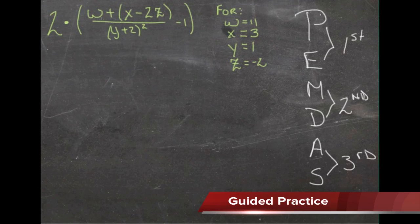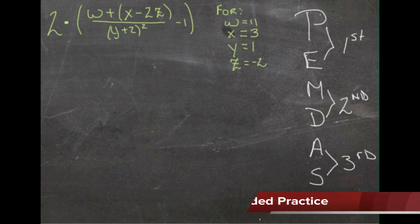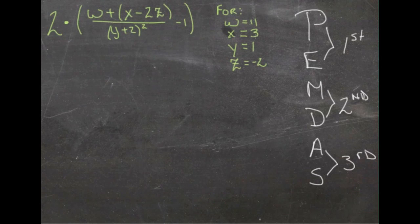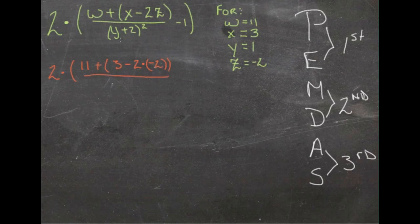We have 2 times the quantity w plus x minus 2z. w is going to be 11, x is going to be 3, z is going to be negative 2. And then we're taking that whole thing and dividing it by y plus 2, quantity squared, where y is 1. So let's substitute in the values for the variables. That will give us 2 times the quantity 11 plus 3 minus 2 times negative 2, all over y plus 2, or 1 plus 2 squared, minus 1.